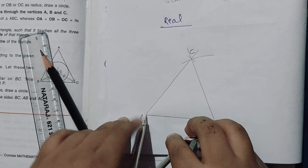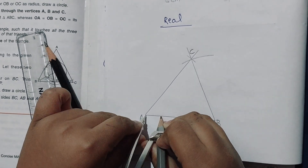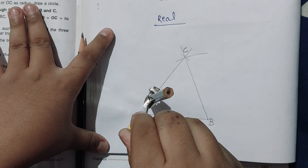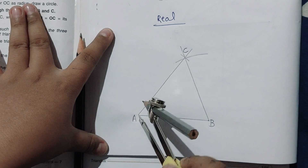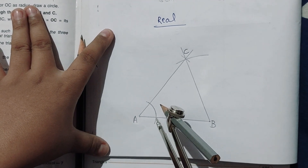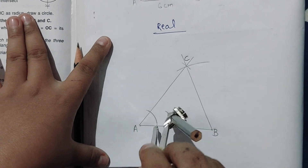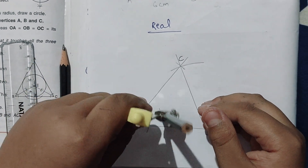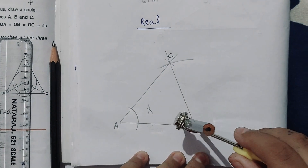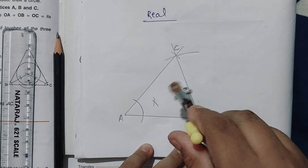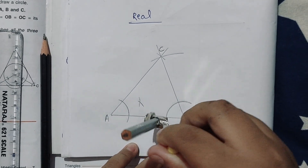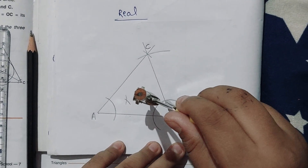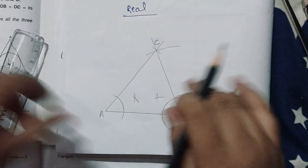Place the compass on vertex A and cut an arc across both sides of the angle. Then, keeping the same measurement, place the compass on each arc intersection and cut two more arcs. Join those intersections to get the bisector of angle A. Then do the same for angle B: place the compass on B, cut an arc, then cut intersecting arcs, and join the lines.